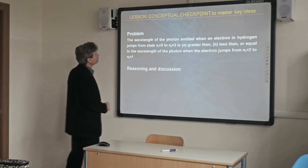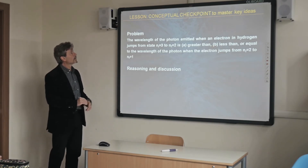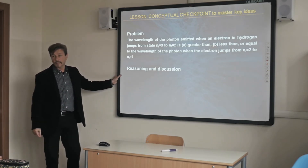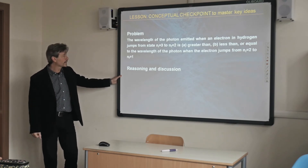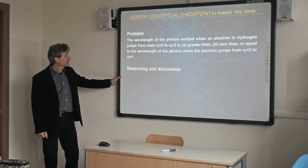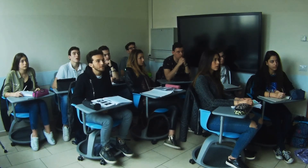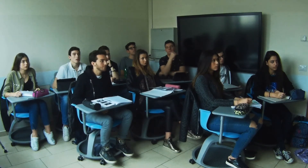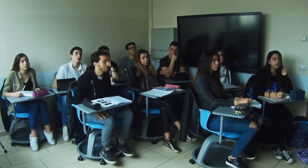Now, we have a conceptual checkpoint to understand whether you have followed what we've covered. Could someone read this problem? The wavelength of the photon emitted when an electron in hydrogen jumps from state n=3 to n=2 is: A) greater than, or B) less than or equal to, the wavelength of the photon emitted when the electron jumps from n=2 to n=1.